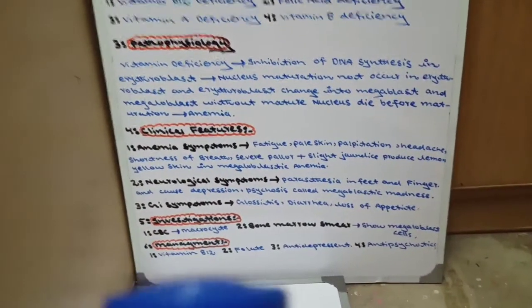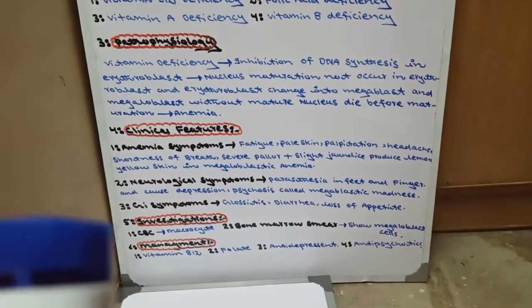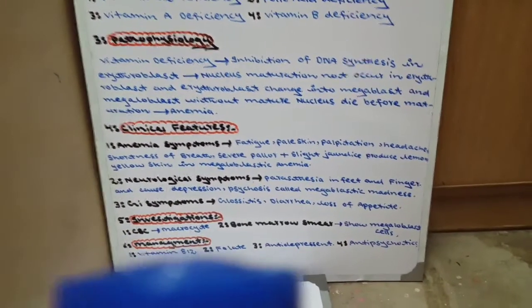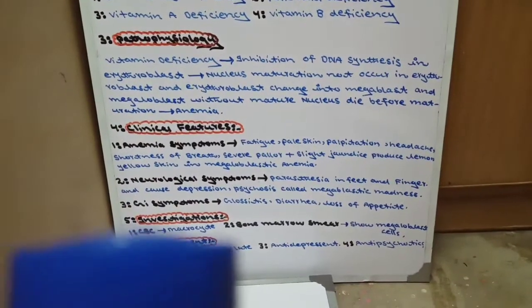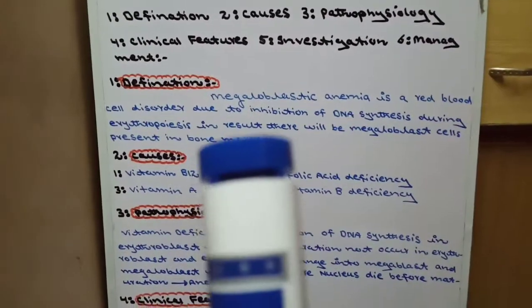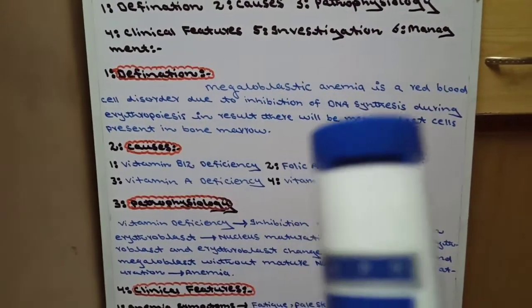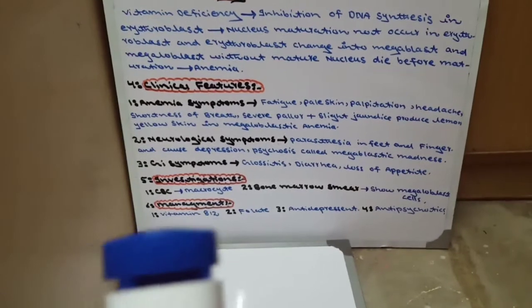Ab investigations. Do investigations karte hain: ek CBC — complete blood count — aur doosra bone marrow smear. CBC kya dikhayega? Macrocytes — bade size ke cells — jis ki mean corpuscular volume 95 se zyada hogi. Bone marrow smear kya dikhayega? Bone marrow ke andar megaloblast cells present honge, jo definition mein bhi humne padha tha — there will be megaloblast cells present in bone marrow — aur woh bone marrow smear ke zariye nazar aayenge.